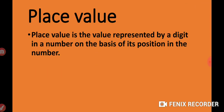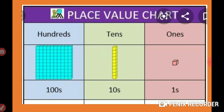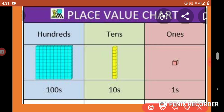Let's start with another topic: place value. What is place value? Place value is the value represented by a digit in a number on the basis of its position in the number. In the place value chart, you see 1's, 10's, and 100's. If we put a number in 1's place, we multiply it by 1. If in 10's place, we multiply by 10. If in 100's place, we multiply by 100.